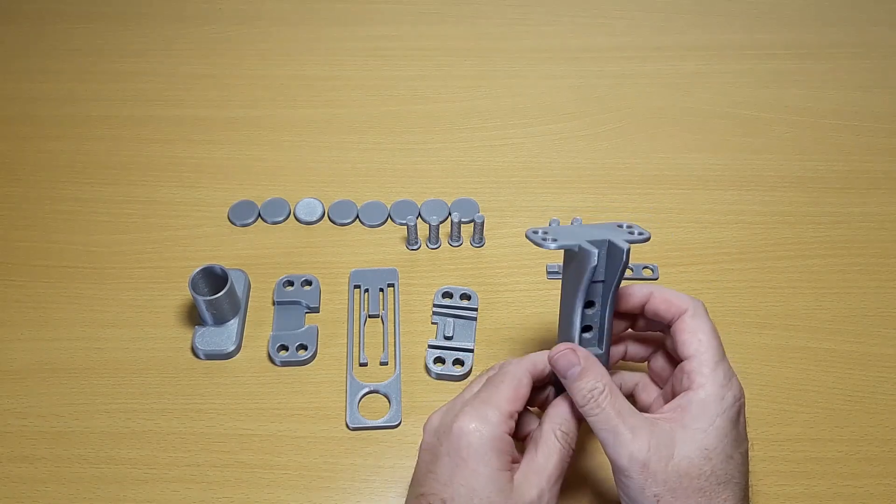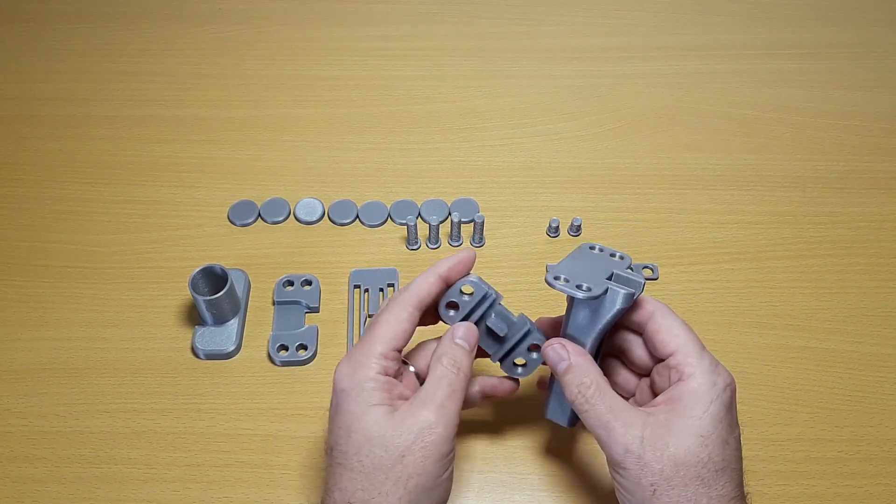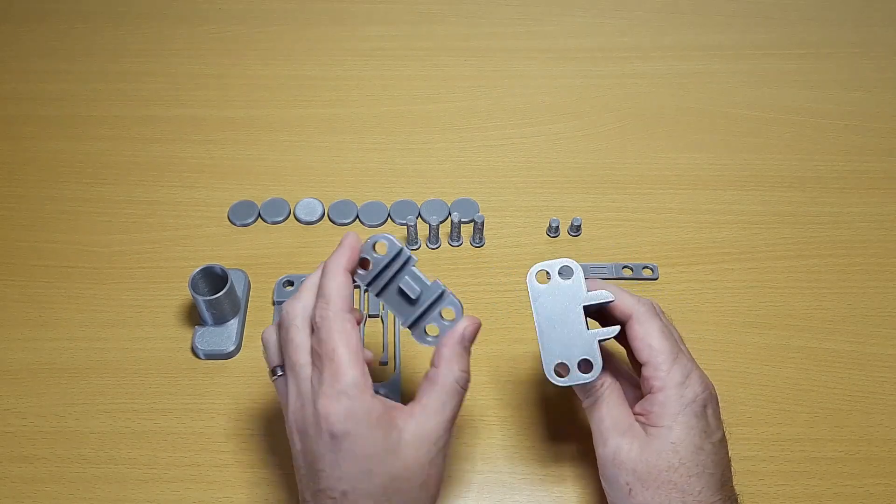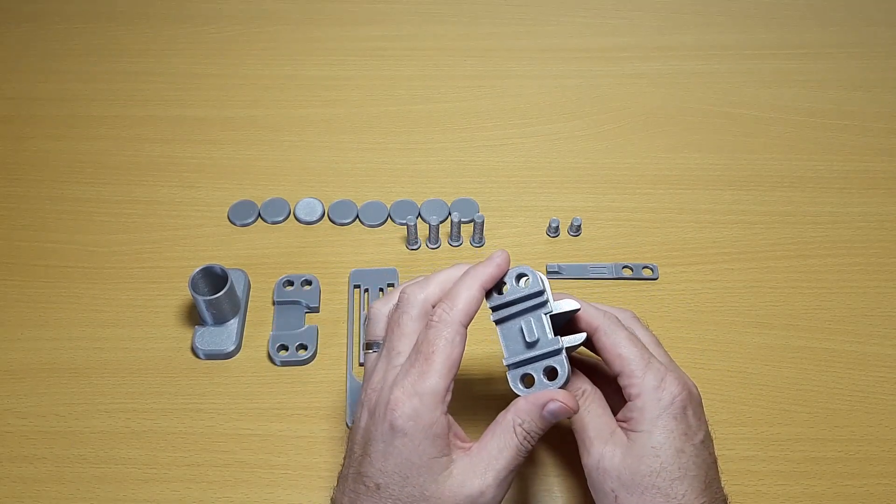Start with the handle. It's important to align the parts very carefully to make sure that the cutout lines up with the slot in the handle.